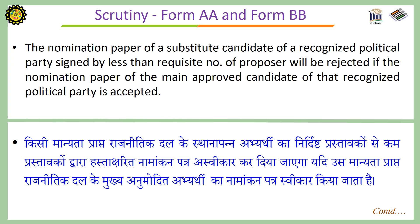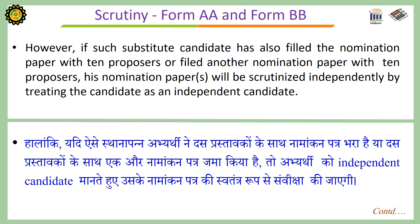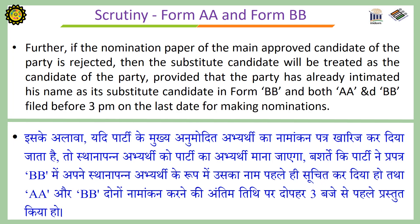The nomination paper of a substitute candidate of a recognized political party signed by less than the requisite number of proposers will be rejected if the nomination paper of the main approved candidate of that recognized political party is accepted. However, if such substitute candidate has also filed the nomination paper with ten proposers or filed another nomination paper with ten proposers, his nomination paper will be scrutinized independently by treating the candidate as an independent candidate. Further, if the nomination paper of the main approved candidate of the party is rejected, then the substitute candidate will be treated as the candidate of the party, provided that the party has already intimated his name as its substitute candidate in Form BB and both AA and BB were filed before 3 pm on the last date for making nominations.